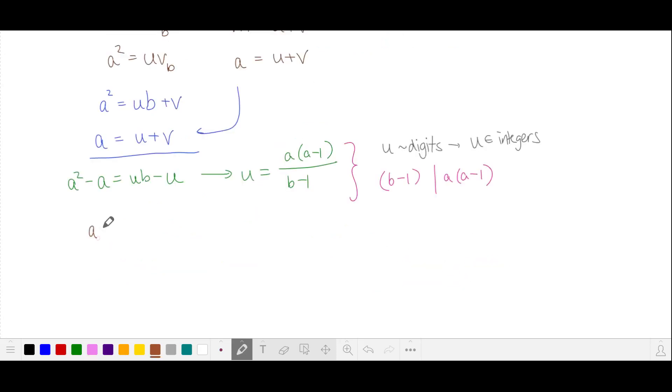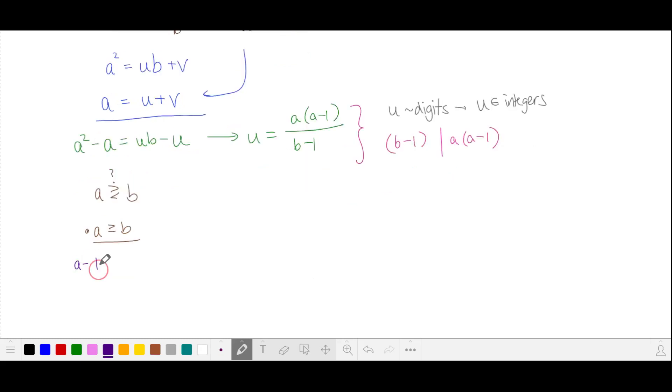First, let's see if we can figure out which is bigger, a or b. Let's go with a greater than or equal to b and see if we can find a contradiction. Subtracting 1 from this inequality and dividing by b minus 1, we'll substitute into our expression for u above. a is greater than or equal to b, and a minus 1 over b minus 1 is greater than or equal to 1.